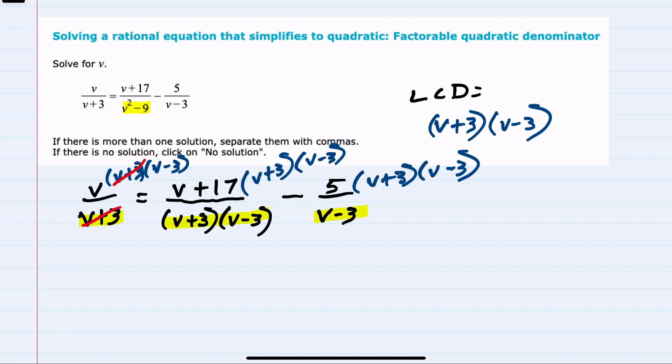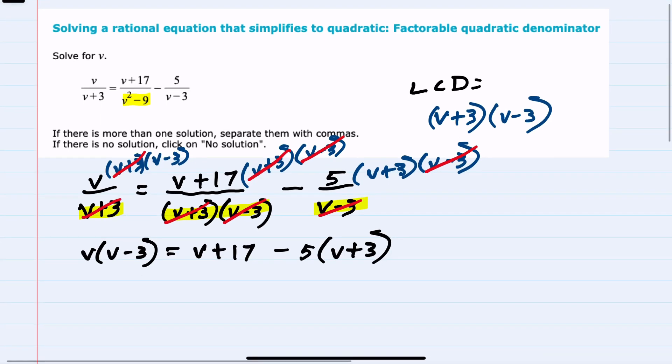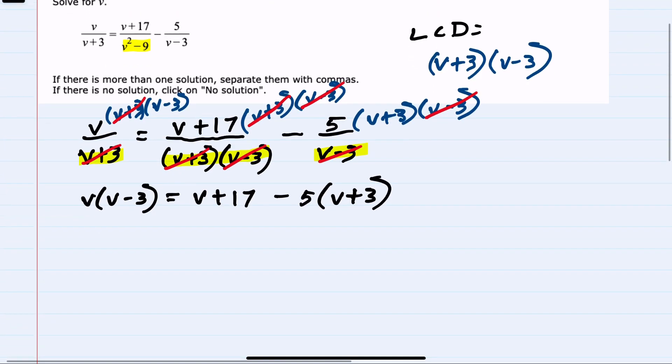This is where all the canceling happens that gets rid of these denominators. Canceling the V plus threes, I'm left with V times V minus three. In this term, both factors in the denominator cancel, leaving me with just the numerator, V plus 17. And here, the V minus threes cancel, so I have a minus five times the V plus three in the numerator. Much easier to solve from here without any of those fractions.